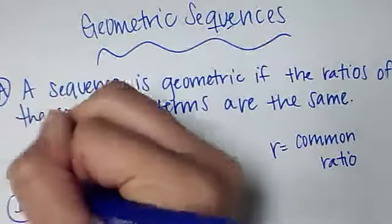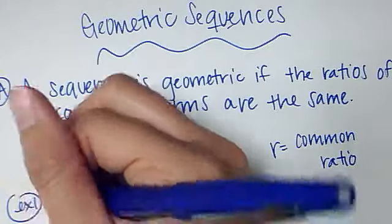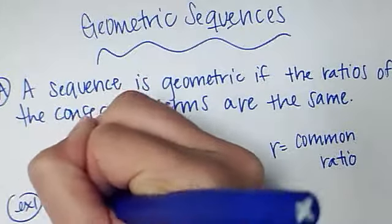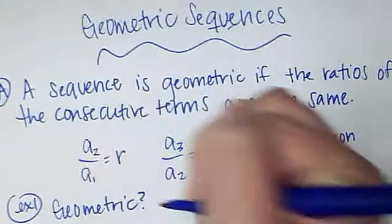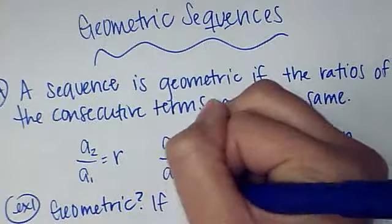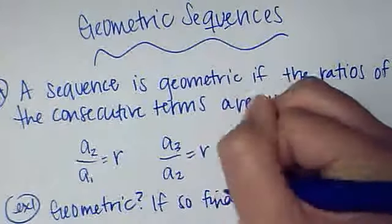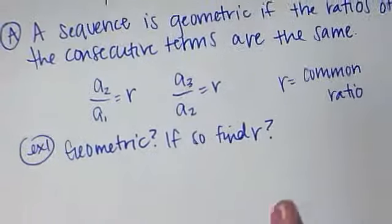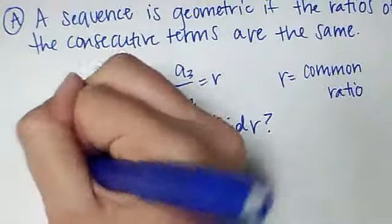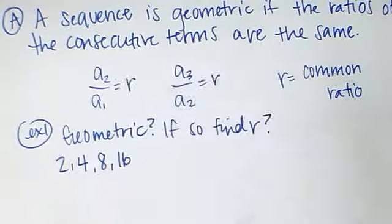Let's look at some examples. Number one, I want you to determine whether it is geometric. If so, find R, the common ratio. If I give you 2, 4, 8, and 16.